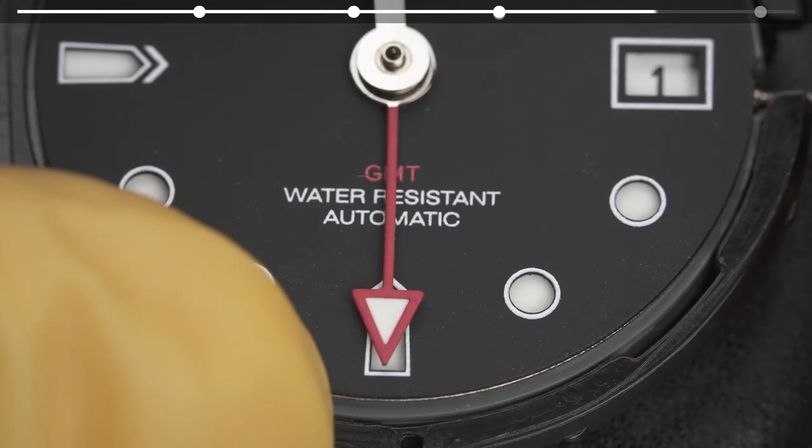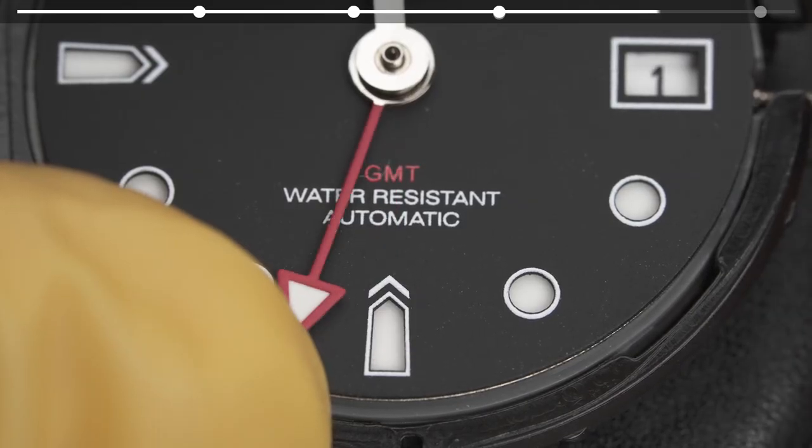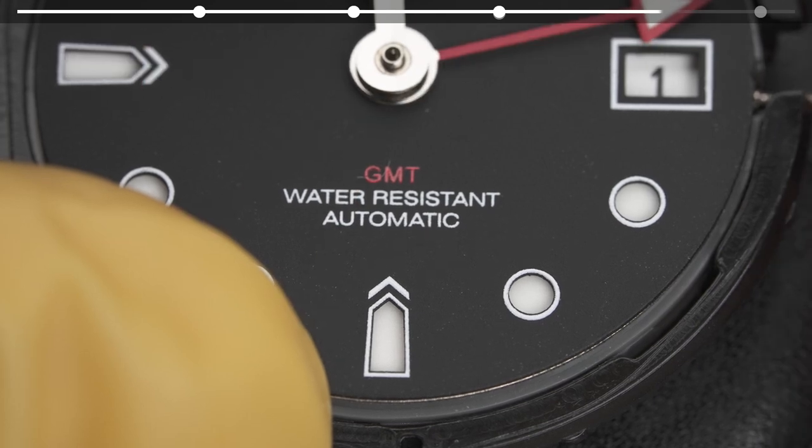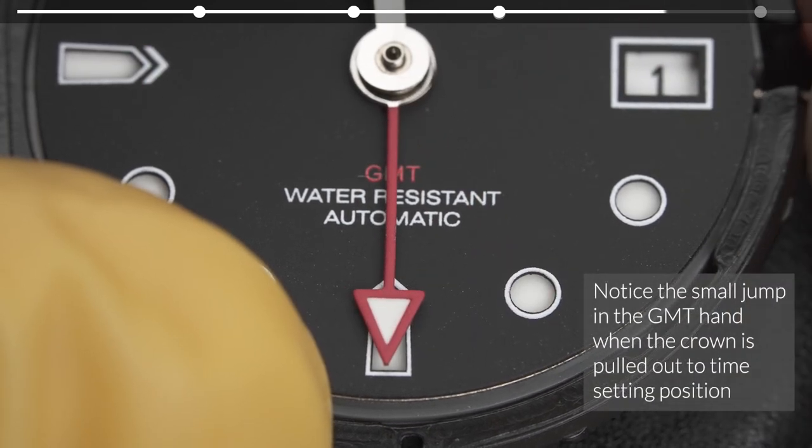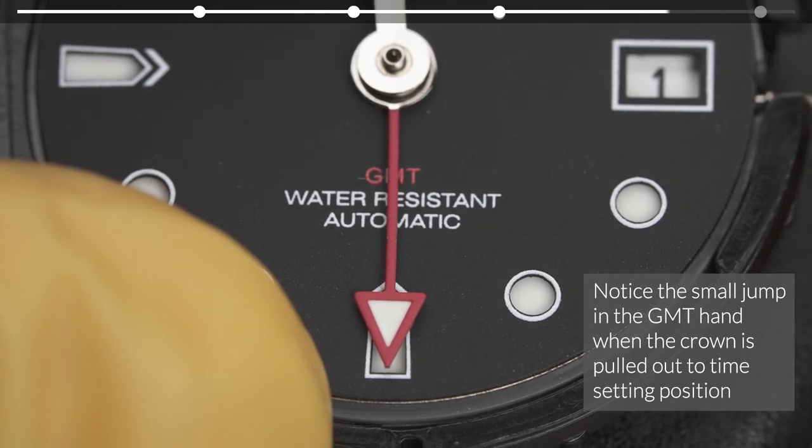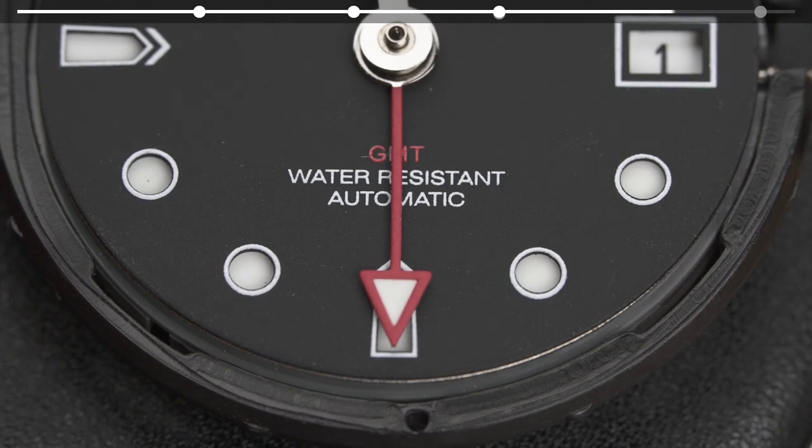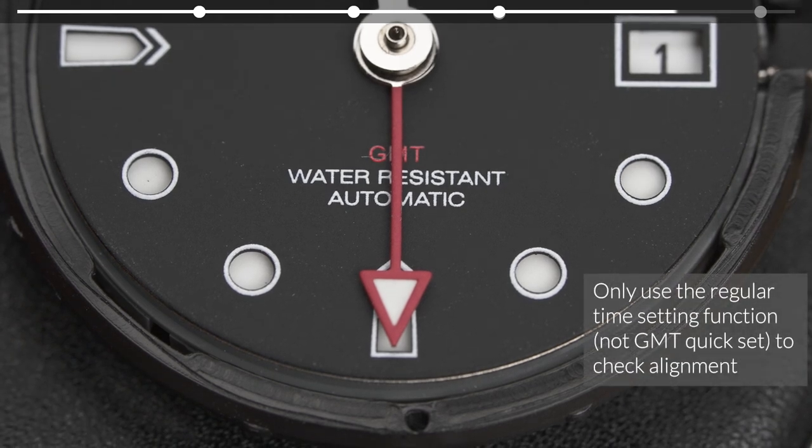A note on the alignment. Since the NH34 is an entry level GMT movement, there's a small discrepancy between the quick set position and the regular position. For this reason, do not use the quick set position to determine the alignment. Always use the regular time changing position to do so.